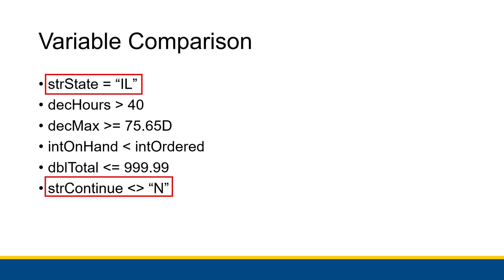The other interesting thing to note are string comparisons, like 'string state is equal to IL' or 'string continue is not equal to the letter N uppercase.' These are tricky because of the nature of strings, which is why I have an entire video specifically about how string comparisons work, focusing on checking for equality and inequality. So put string comparisons on the back burner for now — it's very straightforward for numbers and pretty straightforward for Booleans, but strings get trickier.